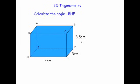In this video we're going to look at 3D trigonometry and a typical example that would involve 3D trigonometry. Here we've got a cuboid ABCDEFGH, and we've got the measurements: the length of it is 4 centimeters, the width of it is 3 centimeters, and the height of it is 3.5 centimeters.